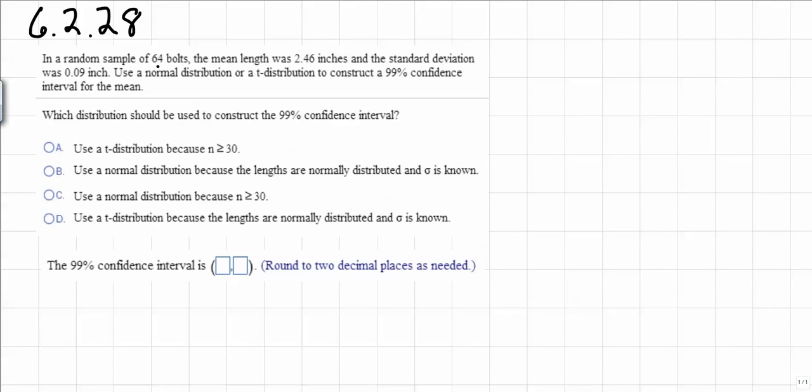Alright, so we're given the fact that the random sample is 64 bolts, that means my n will be equal to 64. The mean length, which is x bar since these are samples, that would be equal to 2.46. And then the standard deviation, that's just little s, that's going to be equal to 0.09.